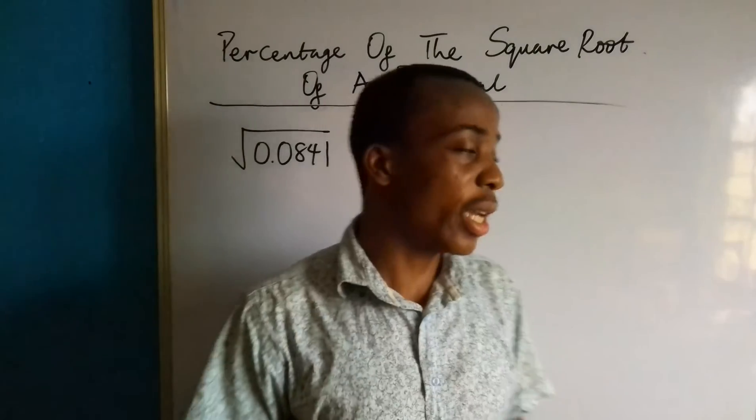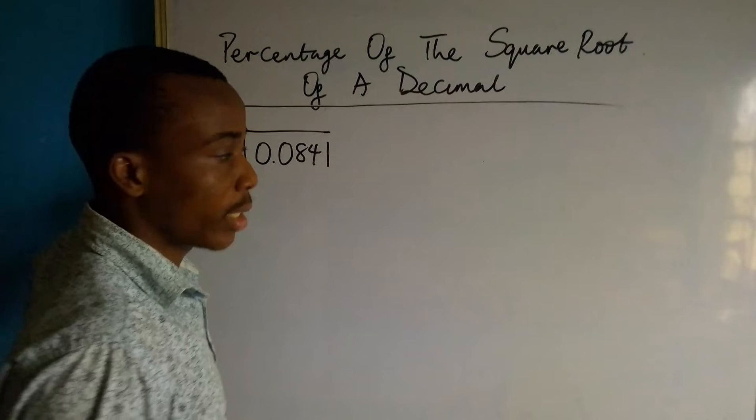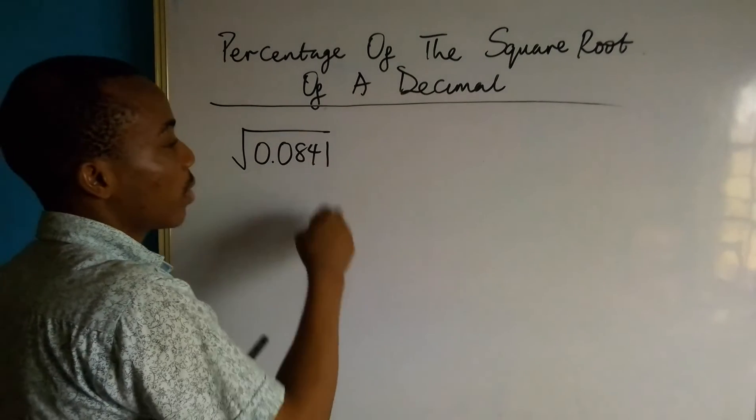Based on the question posted earlier, we have to find the percentage of the square root of a decimal. What we have here is the root of 0.0841.